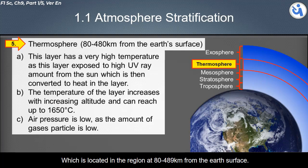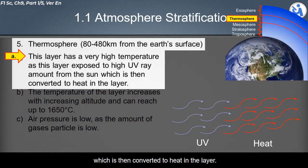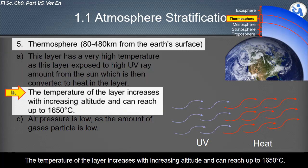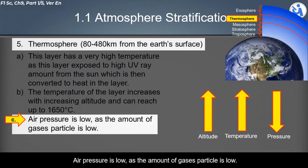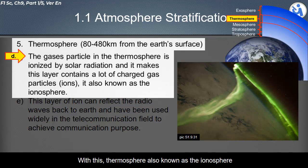The fourth layer of the atmosphere is the thermosphere, located at 80 to 480 kilometers from the Earth's surface. This layer has very high temperatures because it is exposed to high UV radiation from the Sun, which is converted to heat. Temperature increases with altitude and can reach 1,650 degrees Celsius. Air pressure is low, and gas particles are ionized by solar radiation, making this layer rich in charged particles (ions) — which is why the thermosphere is also known as the ionosphere.